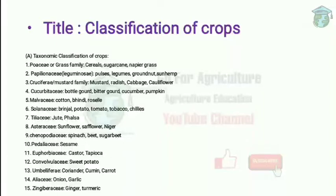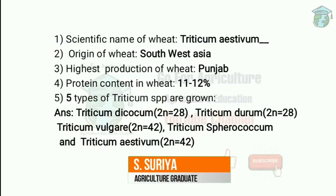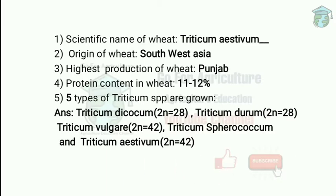Wheat comes under the family Poaceae or grass family. The first question is: what is the scientific name of wheat? It is Triticum aestivum. The origin of wheat is Southwest Asia.